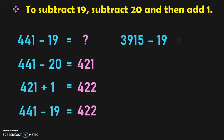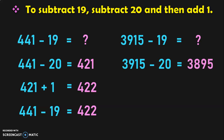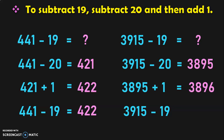Let us do for a 4-digit number. 3,915 minus 19 is equal to what? First, 3,915 minus 20. This is a little tricky because you need to borrow from the 9 in the hundreds place, which becomes 8, giving you 11 in the tens place. 11 minus 2 is 9, so the answer is 3,895. Next, 3,895 plus 1 gives you 3,896. So, 3,915 minus 19 equals 3,896.